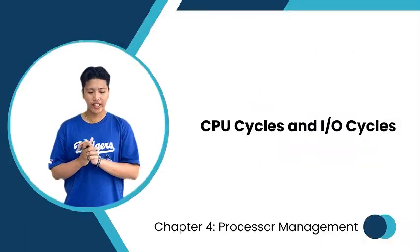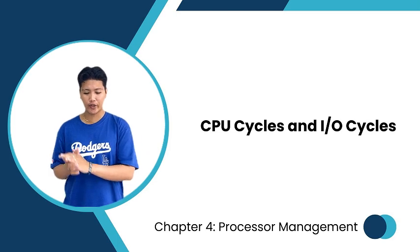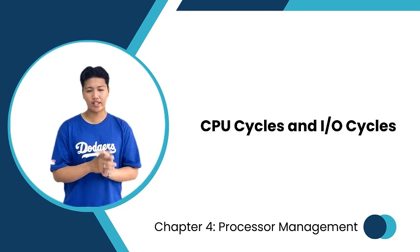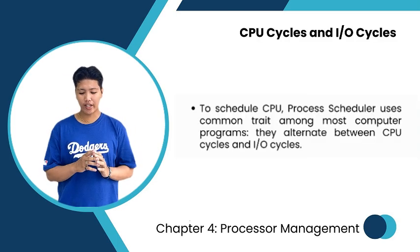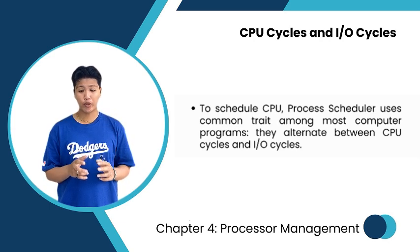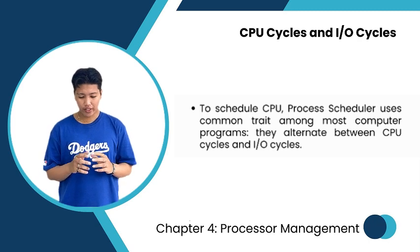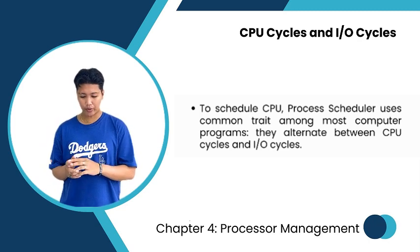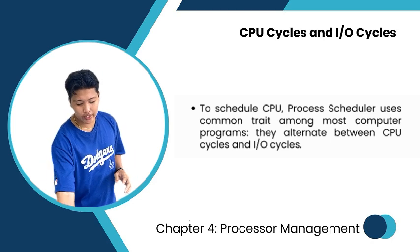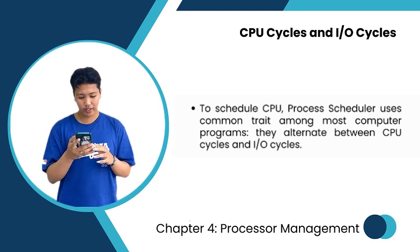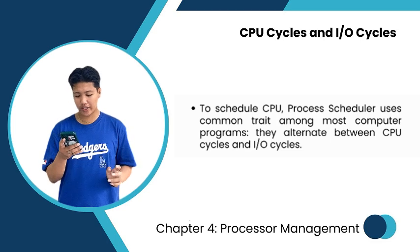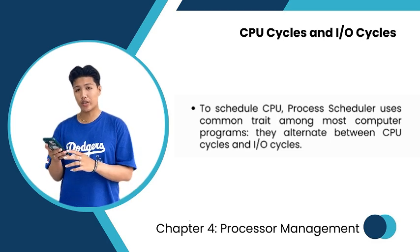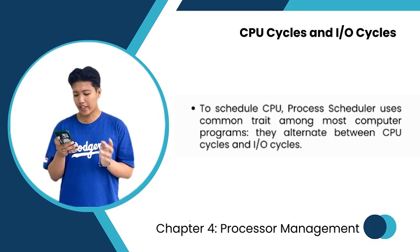Today I'm going to discuss the CPU cycle and I/O cycle. The CPU cycle refers to the basic operations a central processing unit performs to execute instructions. It includes fetching instructions from memory, decoding them, executing the actual operation, and storing the results. Each instruction typically takes one or more CPU cycles to complete.